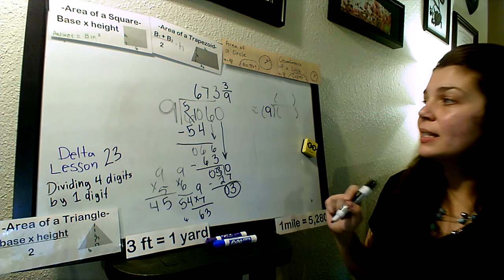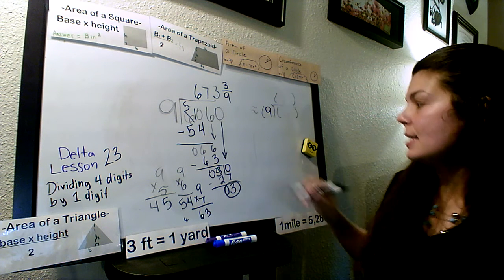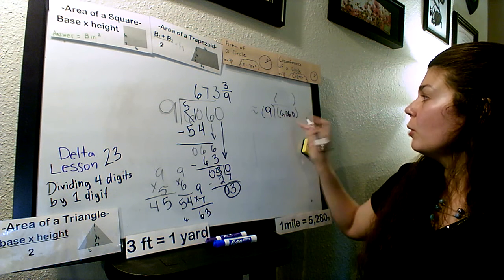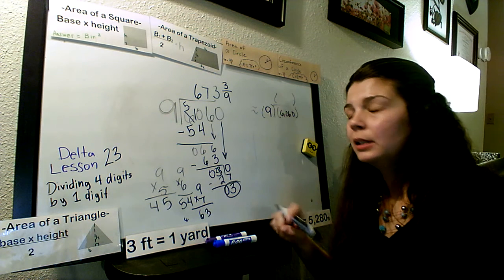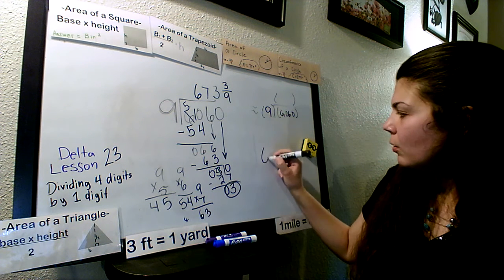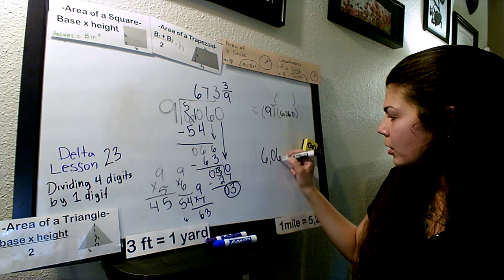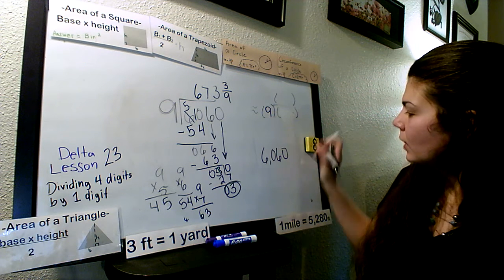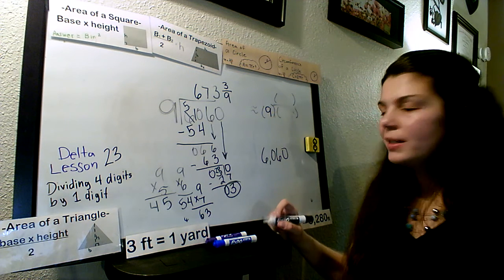So, our old number was 6060. This was right here. But we're going to round that number. 6060. Let's see. What does that round to?